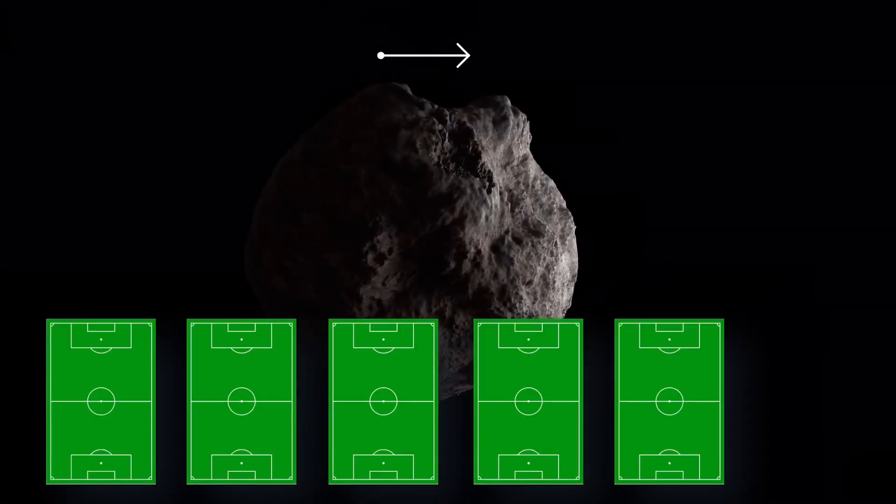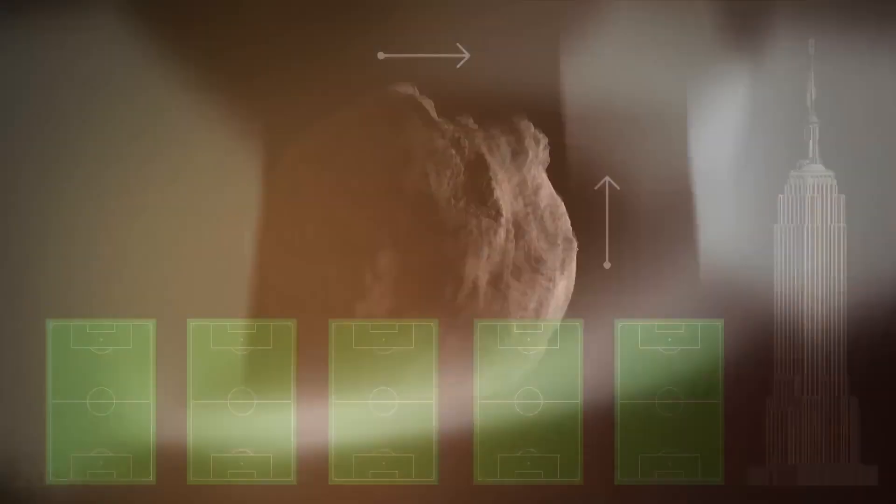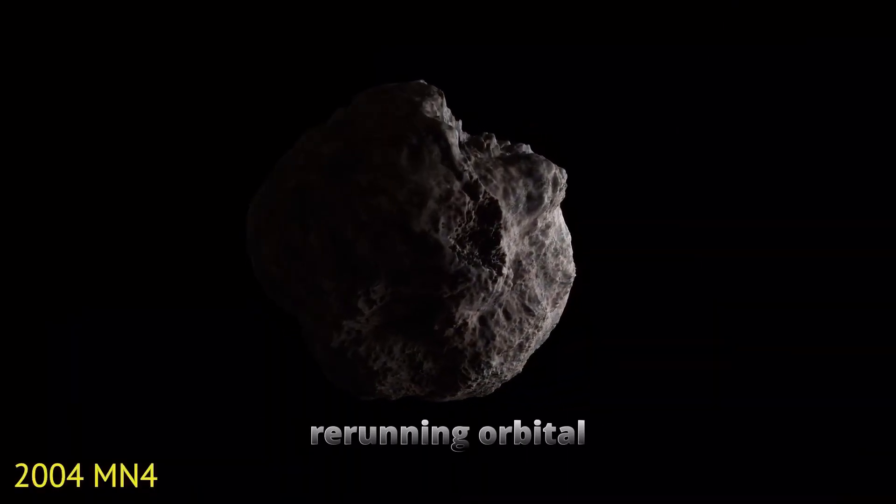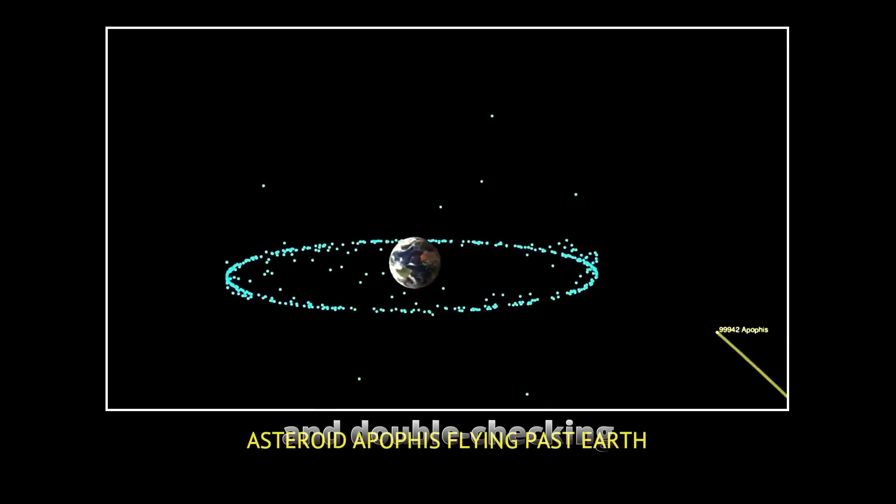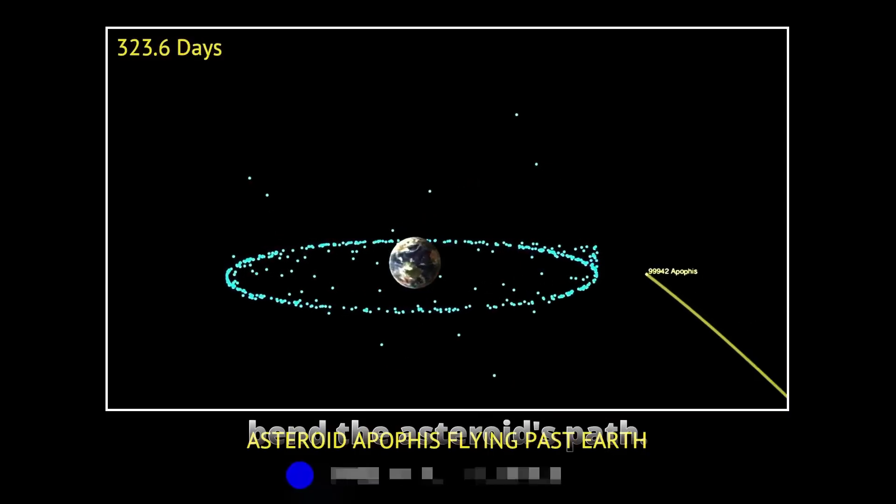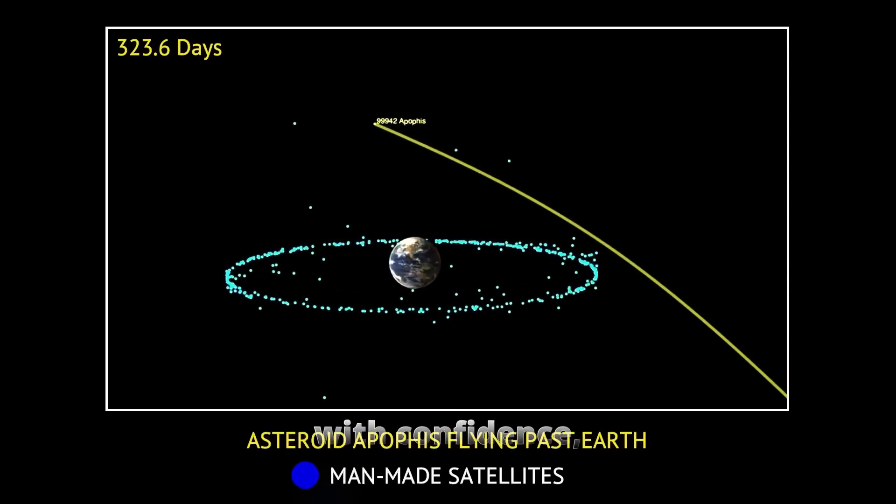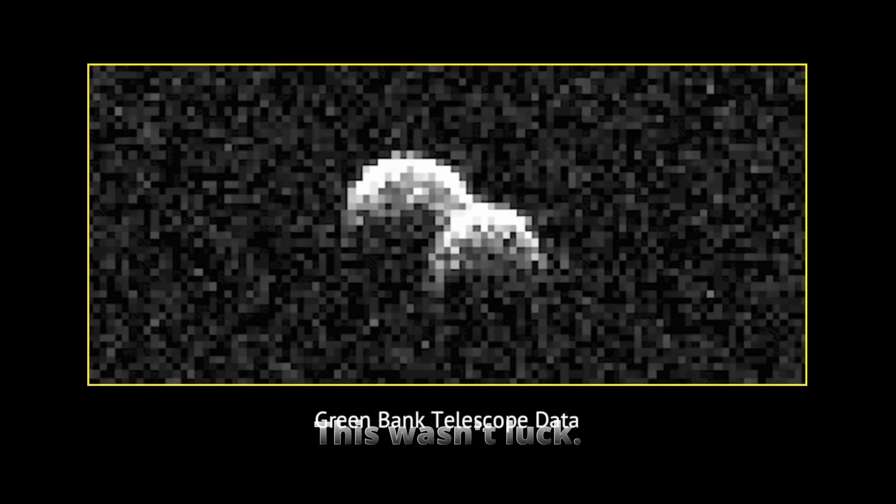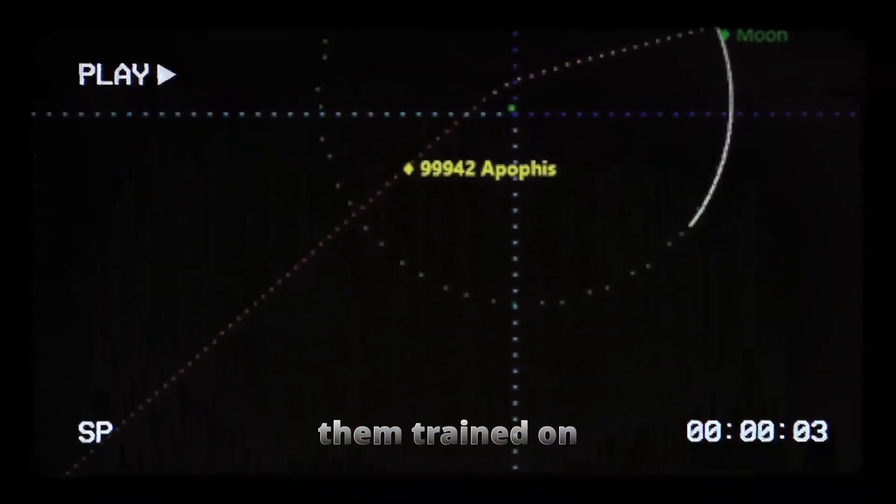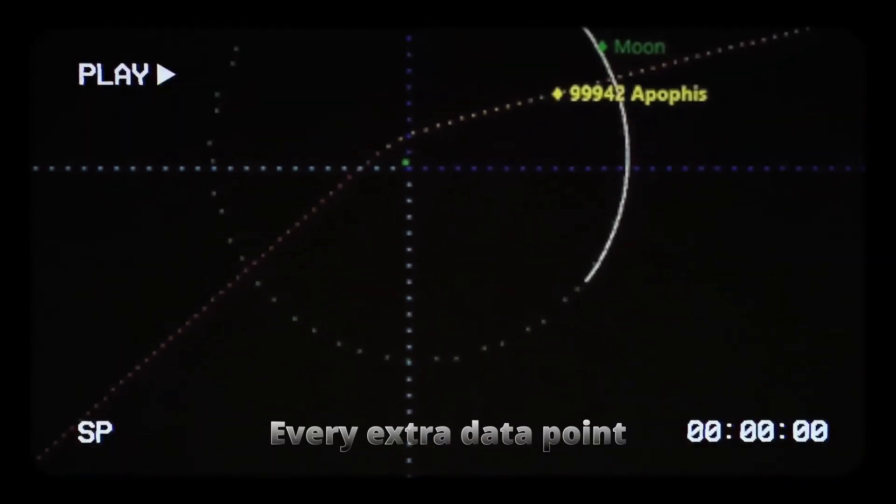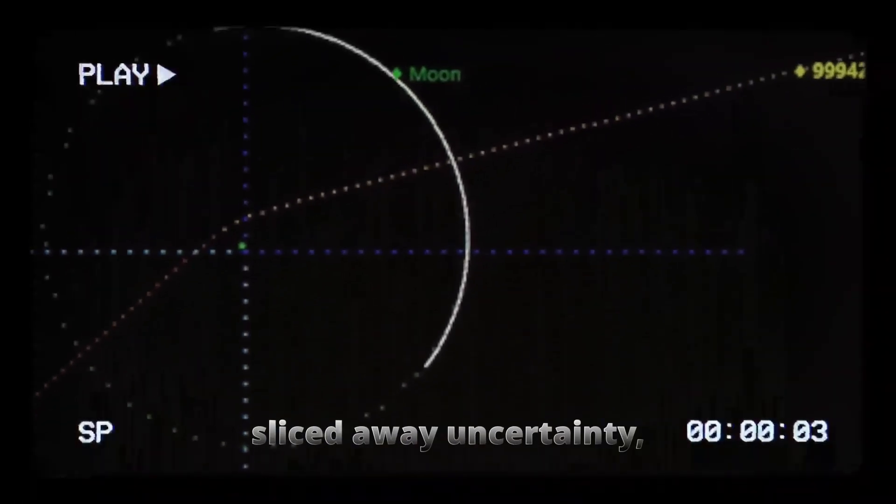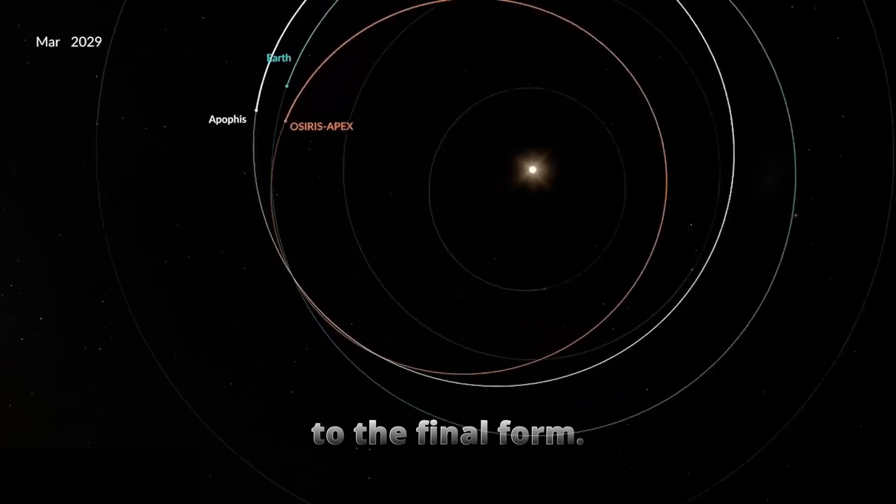That conclusion wasn't instant. It took almost a decade of measuring tiny shifts in position, rerunning orbital simulations, and double-checking every factor that could bend the asteroid's path. At this point, researchers could say with confidence that Apophis posed no danger for at least the next century. This wasn't luck. It was the result of applying the full range of observational tools to one problem and keeping them trained on it for years. Every extra data point sliced away uncertainty, like a sculptor carving down to the final form.